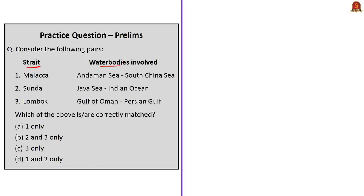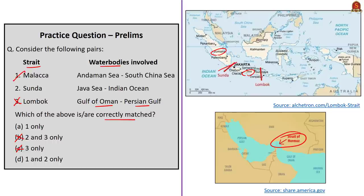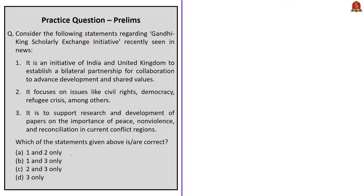The next question gives straits on one side and water bodies on the other, asking which are correctly matched. The third pair claims the Lombok Strait connects the Gulf of Oman and the Persian Gulf — but those are connected by the Strait of Hormuz, not Lombok. This eliminates options B and C. The first pair is correctly matched per options A and D. The Sunda Strait lies between the islands of Java and Sumatra, linking the Java Sea with the Indian Ocean — so the second pair is also correct. The correct answer is option D.